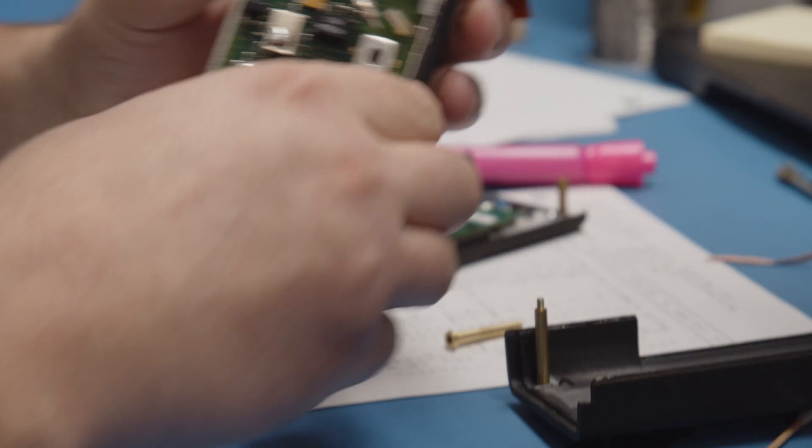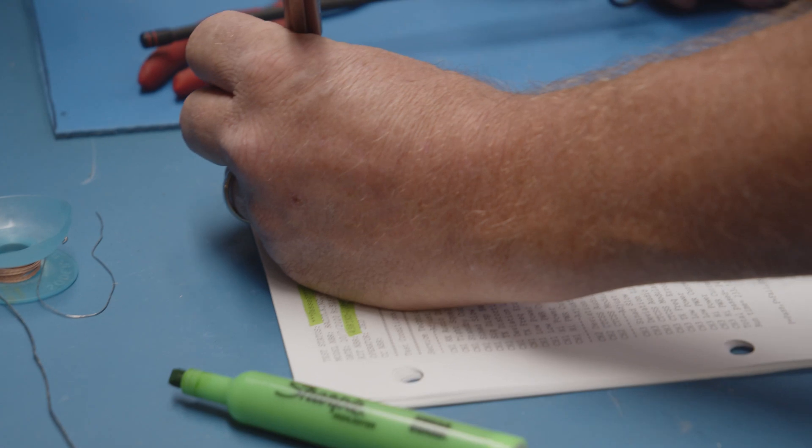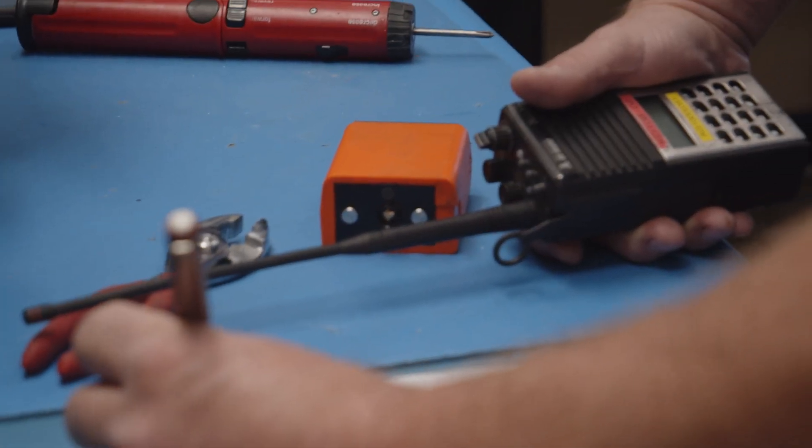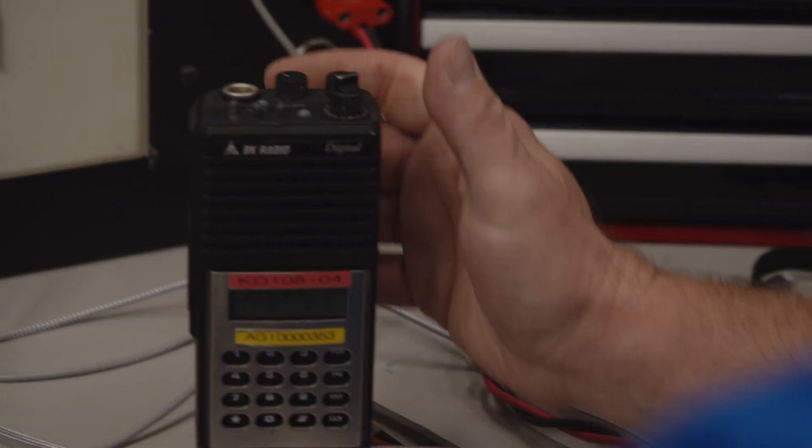Here at the National Interagency Incident Communications Division, we're the folks who go out and support large fires when we have multiple incidents in a specific area. We have about 12,000 handheld radios, 600 repeaters, and other ancillary devices.